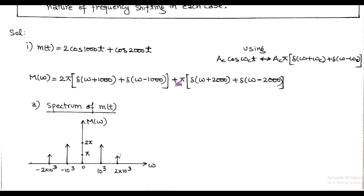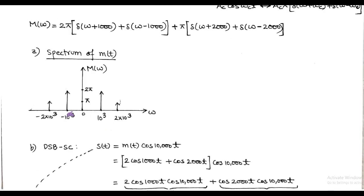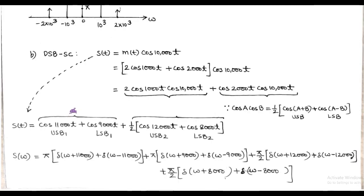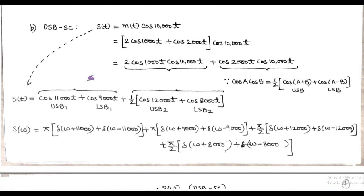The impulses are at ω equals ±1000 with value 2π, and at ±2000 with value π. So accordingly, we get the spectrum of this modulating signal. Second, we have to sketch the spectrum of the double sideband suppressed carrier signal, given as MT times cos(10000t).